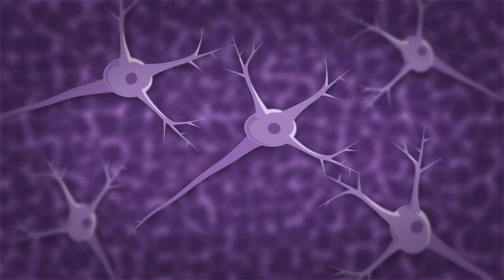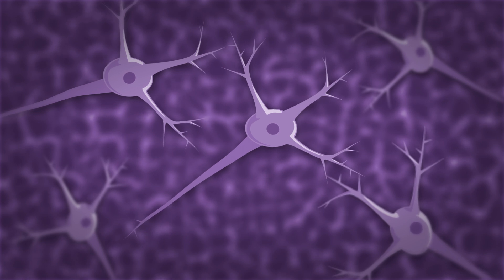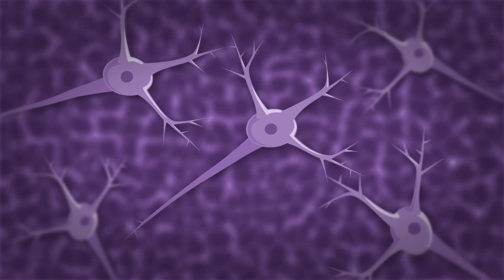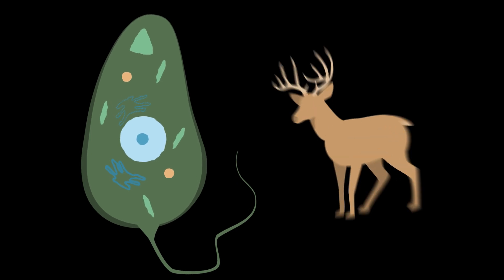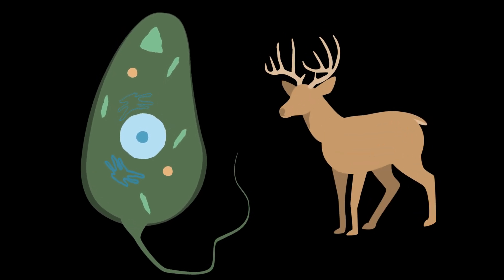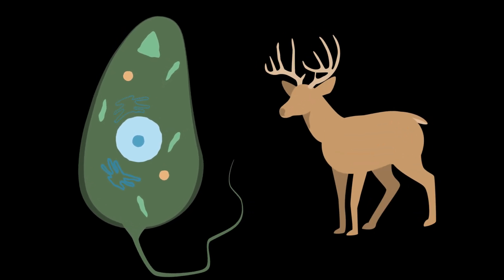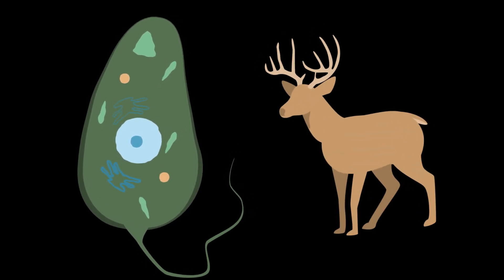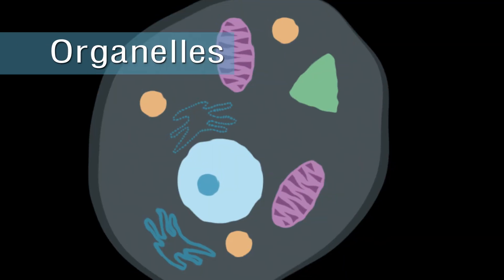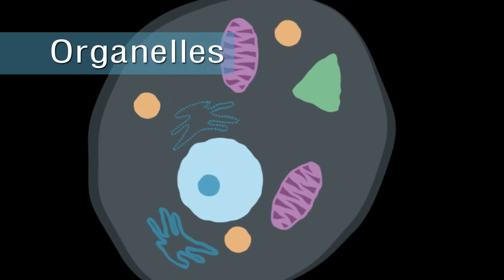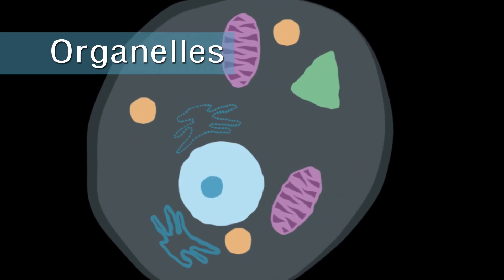Within these tissues we can find cells. The cell is life's fundamental unit of structure and function. A single-celled organism performs all the functions of life, while a multicellular organism has a division of labor among certain specialized cells. Inside both of these cells we can find organelles that perform various functions.